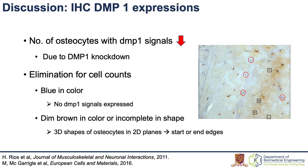The findings in H&E staining were not convincing enough, as no quantitative results could be obtained. For the knockdown group, the number of osteocytes with DMP1 signals was decreased due to DMP1 knockdown. Some cells were eliminated for cell counting because of their shape or color. No DMP1 signals expressed in blue color, and dim brown color or incomplete shape would possibly be due to the 3D shape of osteocytes being visualized in 2D sections — representing the start or end edges of the osteocytes.